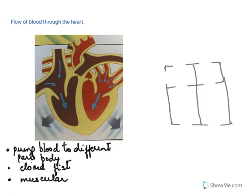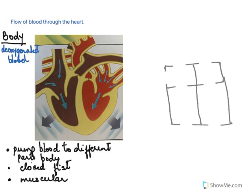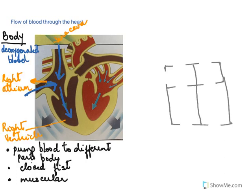Let's see the flow of blood through the heart. From the different parts of the body, deoxygenated blood begins to enter through two veins: the superior vena cava and the inferior vena cava. It enters into the auricles, and from the auricle the blood then flows into the ventricle.